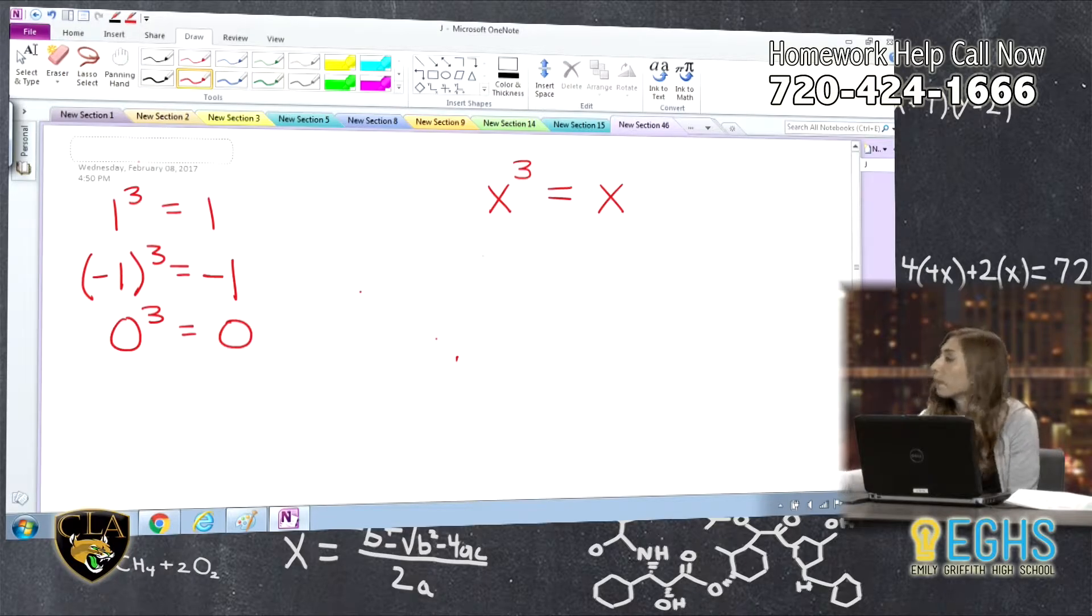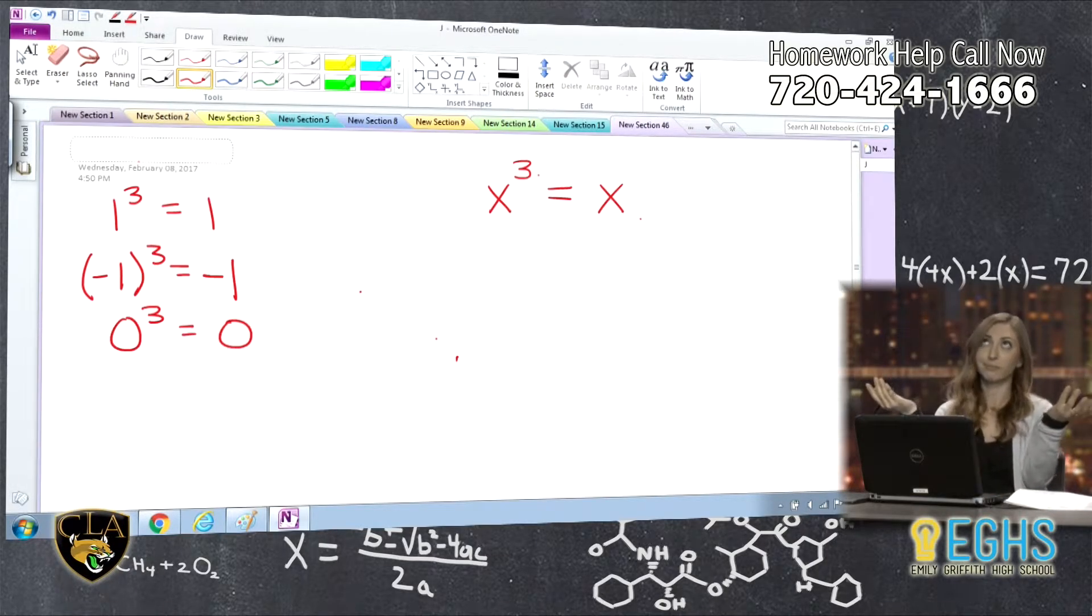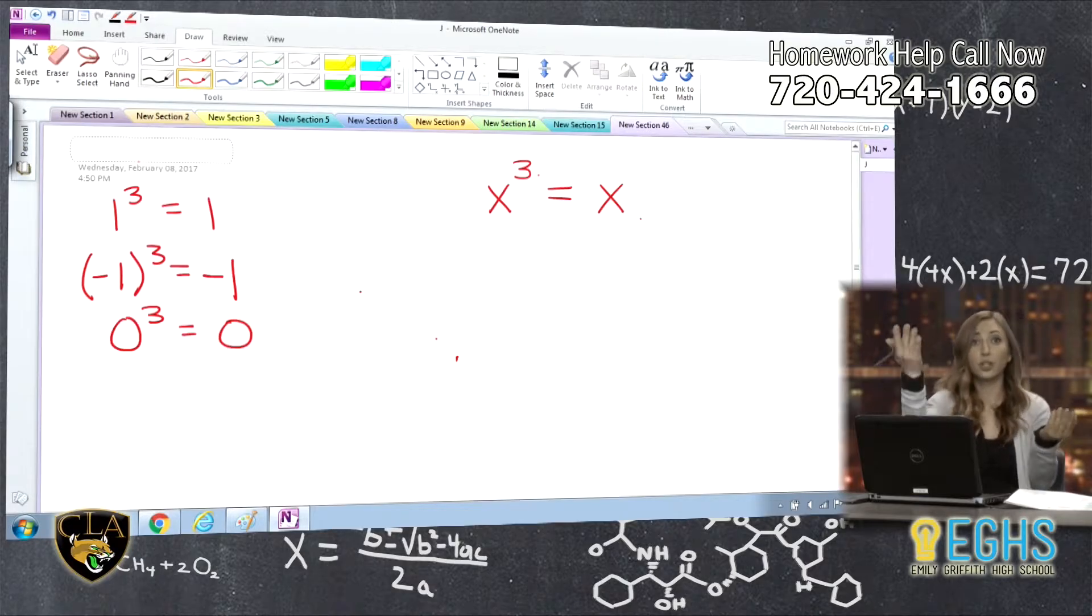And then also zero, yeah, cubed. So if we solve it algebraically, we can actually create an equation for this whole thing, and I'm kind of proving the answers here. Zero cubed would also be zero. And actually I think this algebraic way is great because we didn't say zero. We forgot it, but the algebraic method will show you that zero is an answer.